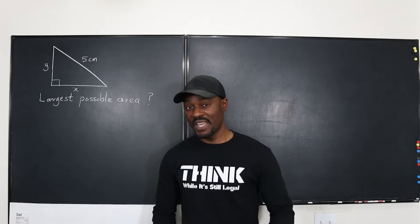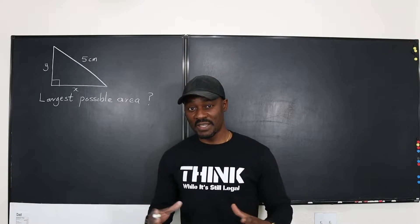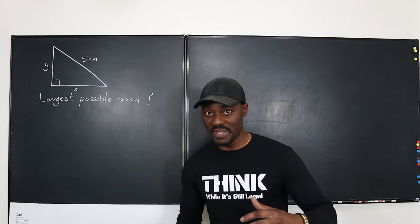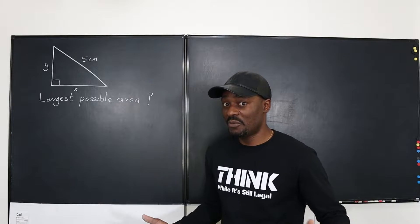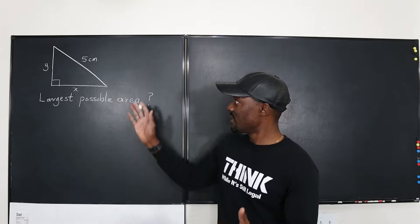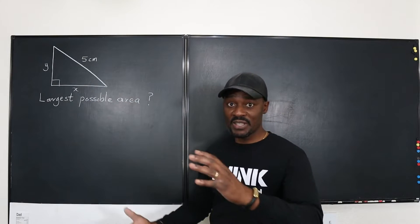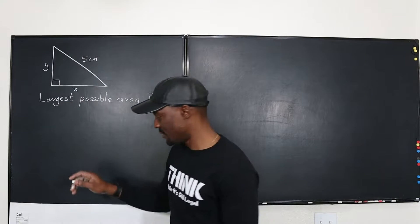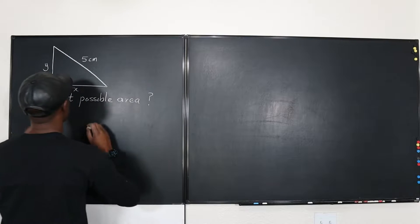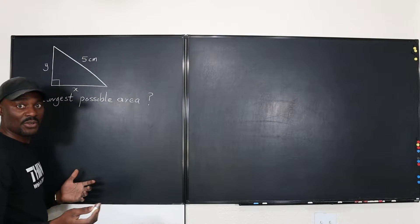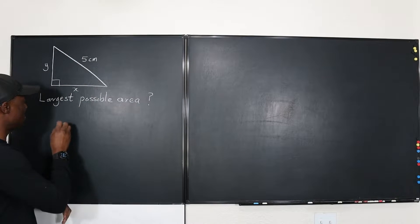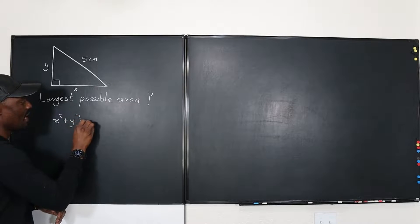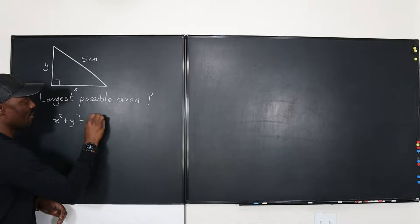The first thing is we want to connect x and y, because we need both of them and they will be changing — if you change x, you have to change y because the hypotenuse has to stay constant. The Pythagorean relationship is that x squared plus y squared has to equal 5 squared.